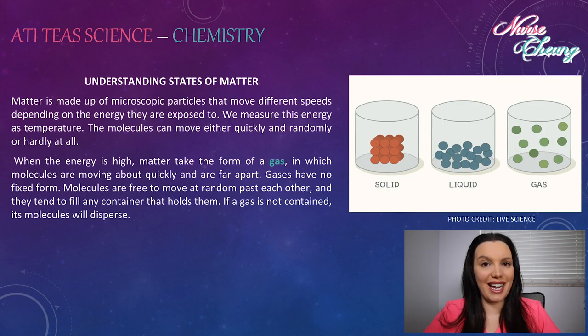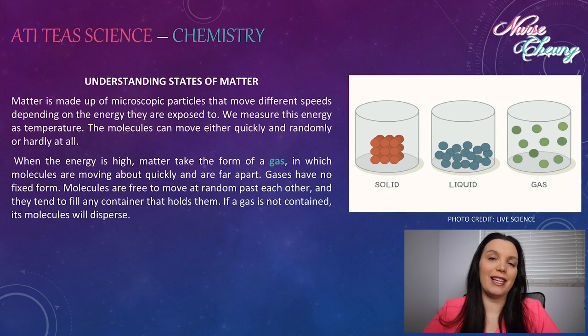Let's get started with understanding states of matter. Matter is made up of microscopic particles that move at different speeds depending on the energy they are exposed to. We measure this energy as temperature. The molecules can either move quickly and randomly or hardly at all. When the energy is high, matter takes the form of gas in which molecules are moving about quickly and are far apart. Gases have no fixed form.